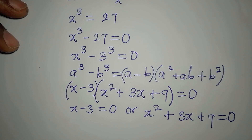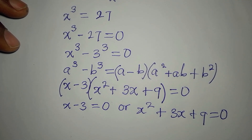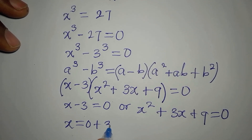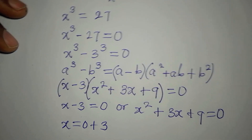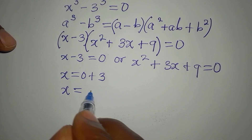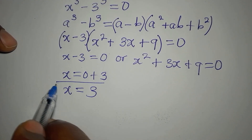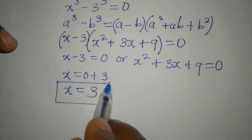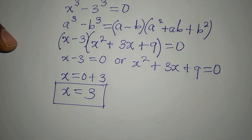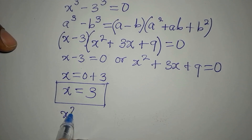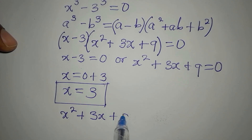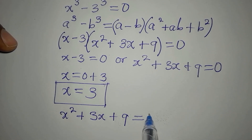From the first factor, x minus 3 equals 0, so x equals 3. That is the first solution. We now need two more solutions from the quadratic equation x squared plus 3x plus 9 equals 0.